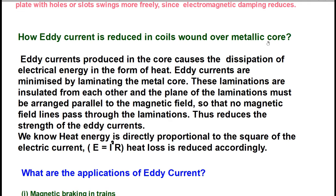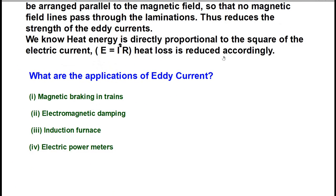Heat energy produced is equal to I²R, where I is the current and R is the resistance. By laminating the core, I is reduced, hence heat energy loss is also reduced. The applications of eddy currents include magnetic braking in trains, electromagnetic damping, induction furnace, and electric power meters.